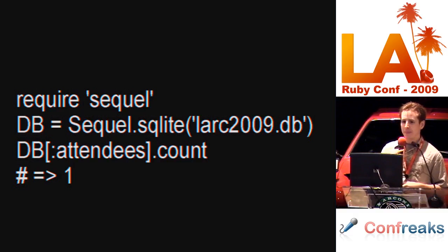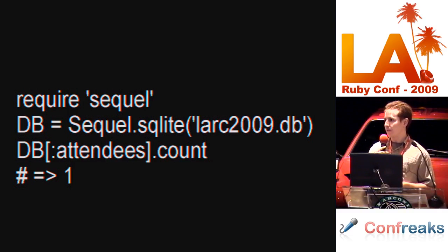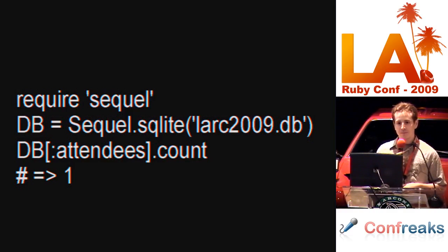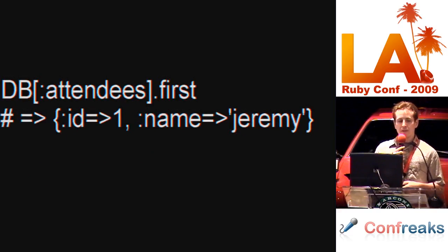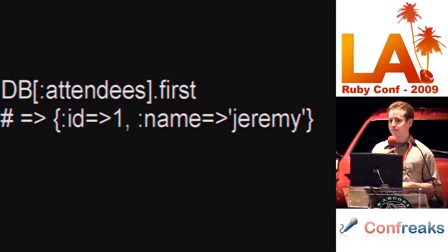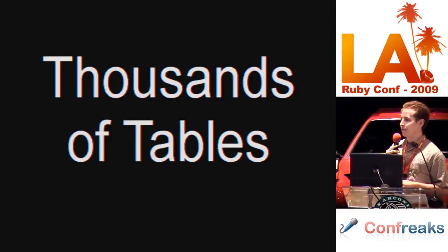There are multiple ways to create the database object. One common way is using the connect method. Sequel also provides methods for each adapter type — if you are using SQLite, you just need to call the SQLite method with the file or database. Once you have your database object, you can immediately use it to return results. Here, we're using the count method to get the number of attendees. Sequel does not force you to create models if they don't help your application. If you are using models, Sequel will return rows as a hash with simple keys, and you can actually use Sequel to return any type of object of your choosing.